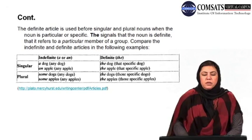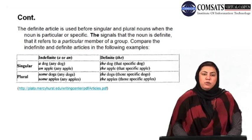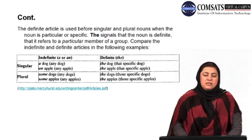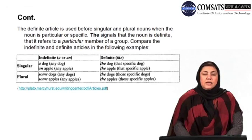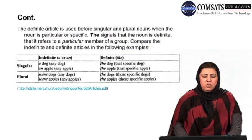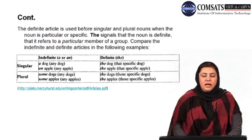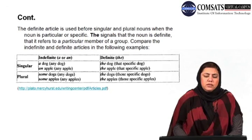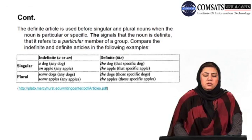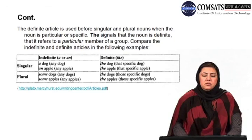Compare the definite and indefinite articles in the following examples. In case of singular, the indefinite article 'a' or 'an' is used: 'a dog' means any dog, whereas 'the dog' means the specific dog. 'An apple' means any apple, whereas 'the apple' means that specific apple. When it comes to plurals: 'some dogs' means any dogs, but 'the dogs' means those specific dogs. In the same way, 'some apples' means any apples, but 'the apples' means those specific apples.